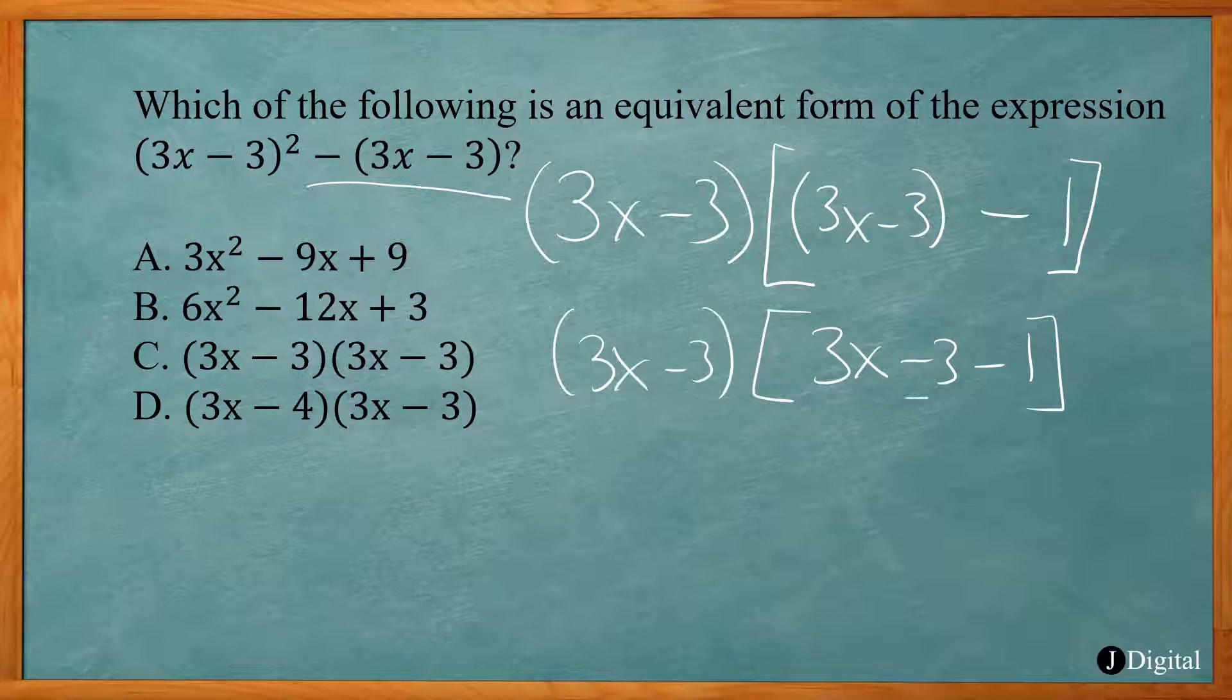Then combine like terms. So 3x - 4. And there you go. (3x - 3)(3x - 4). So answer D.